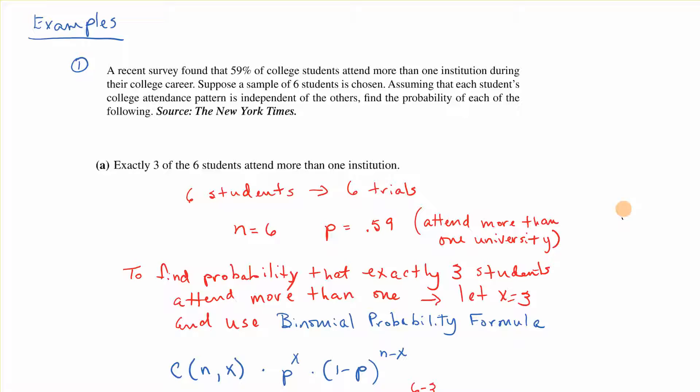Recent survey found that 59% of college students attend more than one institution during their college career. Suppose a sample of six students is chosen. Assuming that each student's college attendance pattern is independent of the others, find the probability of each of the following.